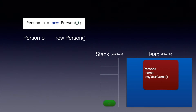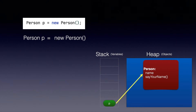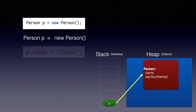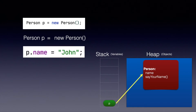With that equals assignment, the linking is created. Now we know that we can use p to access the person object that we just created. This variable p can be used to access the object that sits in the heap.